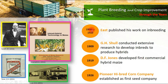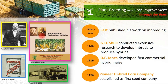Between 1908 and 1910, East published his work on inbreeding in 1909. J.H. Shull conducted extensive research to develop inbreds to produce hybrids.